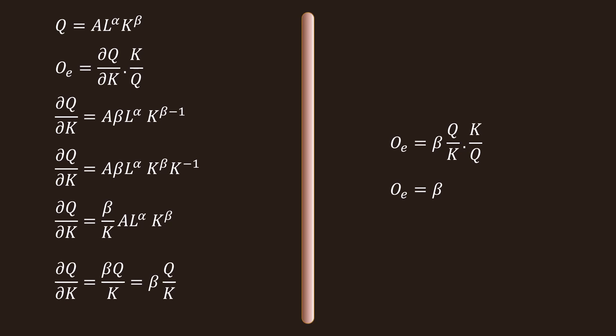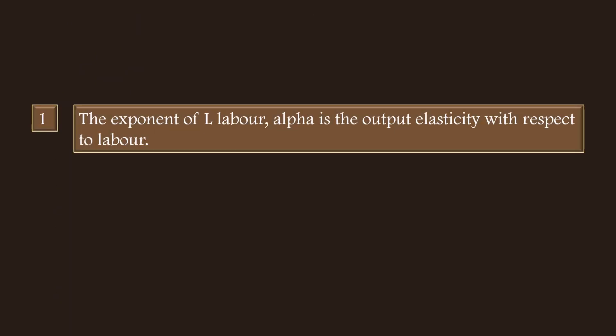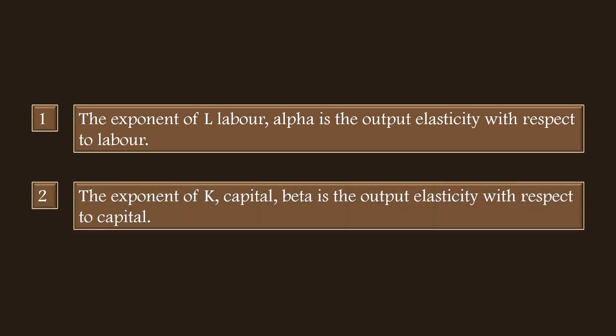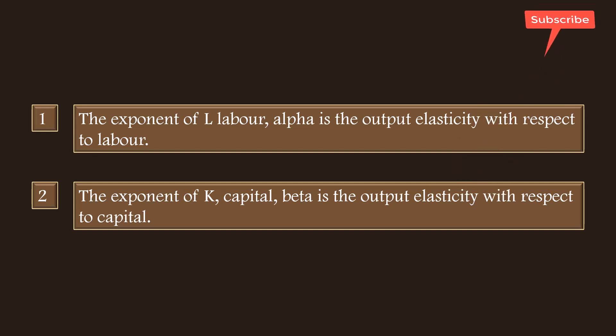In the Cobb-Douglas production function, the key points are: 1. The exponent of labor, alpha, is the output elasticity with respect to labor. 2. The exponent of capital, beta, is the output elasticity with respect to capital. Our discussion ends here. We shall meet in the next lesson.